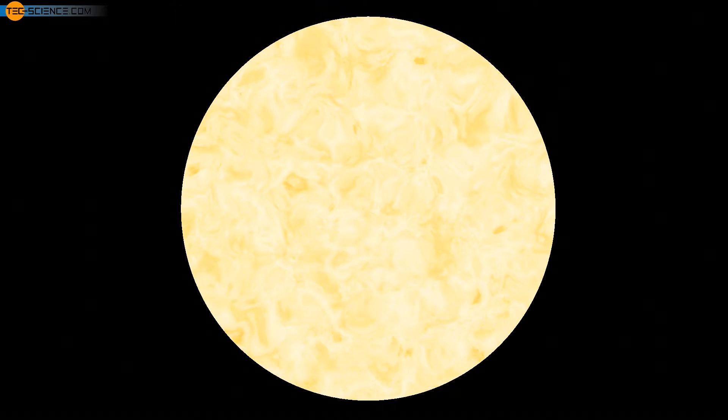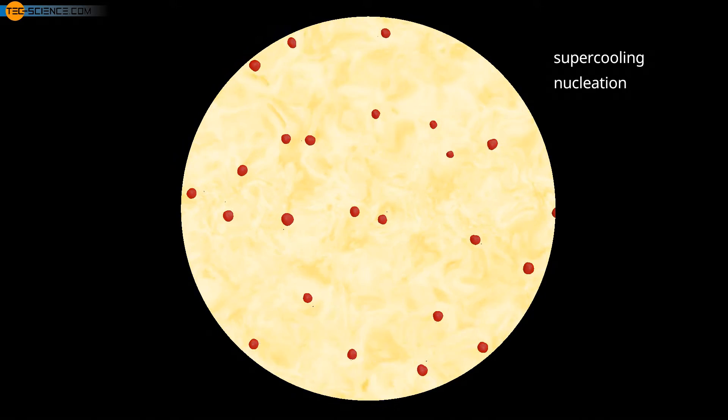For a molten metal to solidify, there must be supercooling, which means that the temperature of the molten metal must be below the solidification point. On the other hand, nuclei must be present that provide the necessary activation energy to trigger solidification.